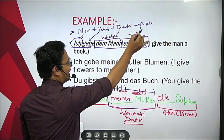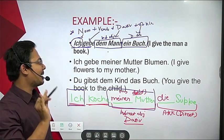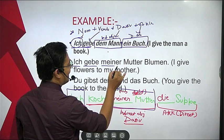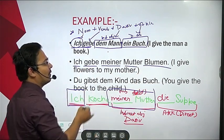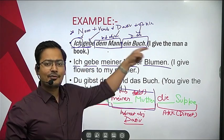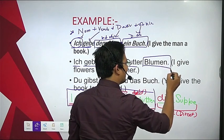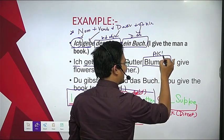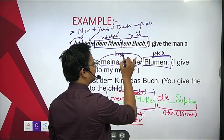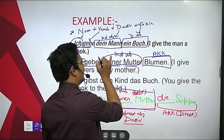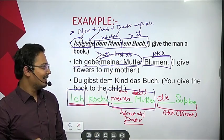Another example: Ich gebe meiner Mutter Blumen. I give what? Flowers — so Blumen is accusative, the direct object. To whom? My mother — so 'meiner Mutter' is the indirect object, which is dative. Because Mutter is feminine and dative, 'meine' changes to 'meiner'. This is how we frame dative sentences.